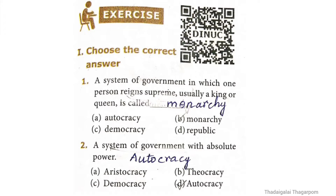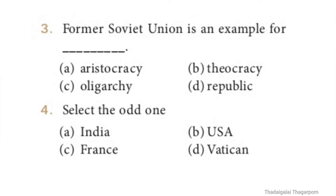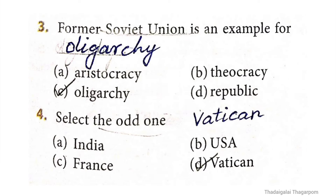Second question: a system of government with absolute power is what? The correct answer is option D: autocracy. Third question: the former Soviet Union is an example for what? The correct answer is option C: oligarchy.